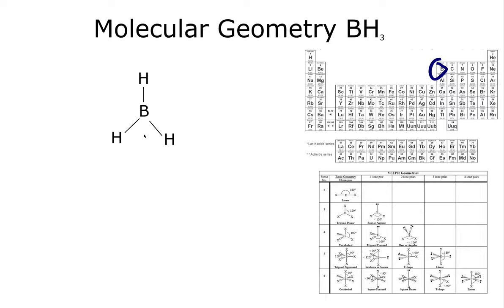So our molecule shape is trigonal planar, and the degree between these hydrogens is 120 degrees. So right here is 120 degrees, right here is 120 degrees, and right here is 120 degrees.